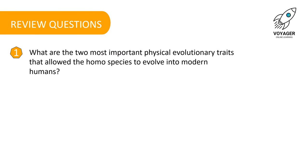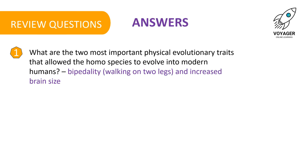Let's check the answer to our review question: What are the two most important physical evolutionary traits that allowed the Homo species to evolve into modern humans? The answer is bipedality — that means walking on two legs — and increased brain size.